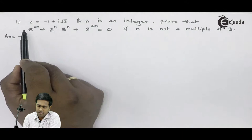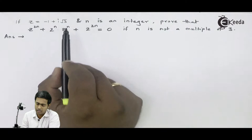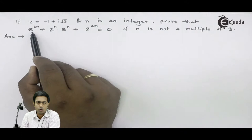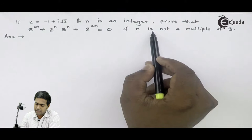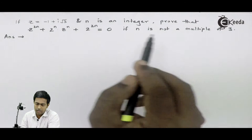The next question is: if z is equal to minus 1 plus i root 3 and n is an integer, then prove that z raised to 2n plus 2 raised to n times z raised to n plus 2 raised to 2n is equal to 0, if n is not a multiple of 3.